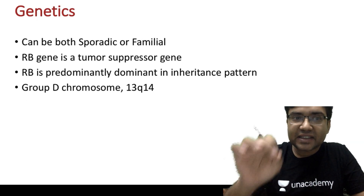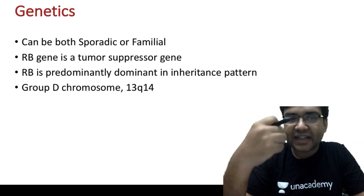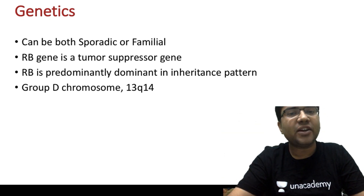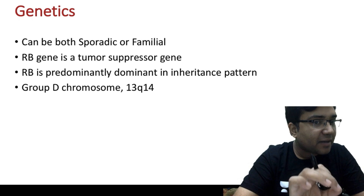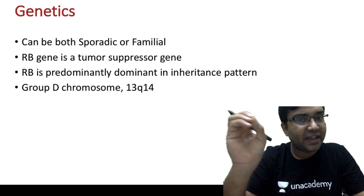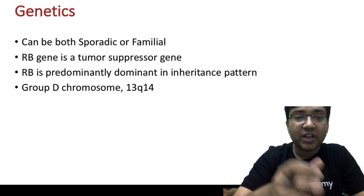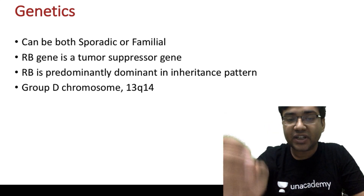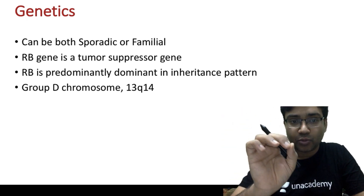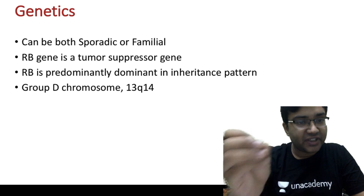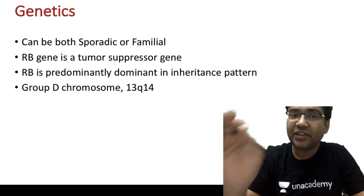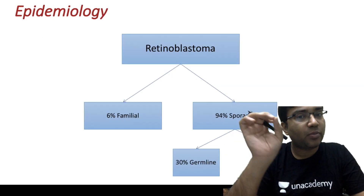The genetics of retinoblastoma are commonly asked. Retinoblastoma can be both sporadic or familial. The RB gene is a tumor suppressor gene which is predominantly dominant in its inheritance pattern. It is basically seen as a mutation of the 13q14 gene, which is on a group D chromosome. Chromosome 13, a group D chromosome, is where maximum mutations responsible for retinoblastoma are seen.